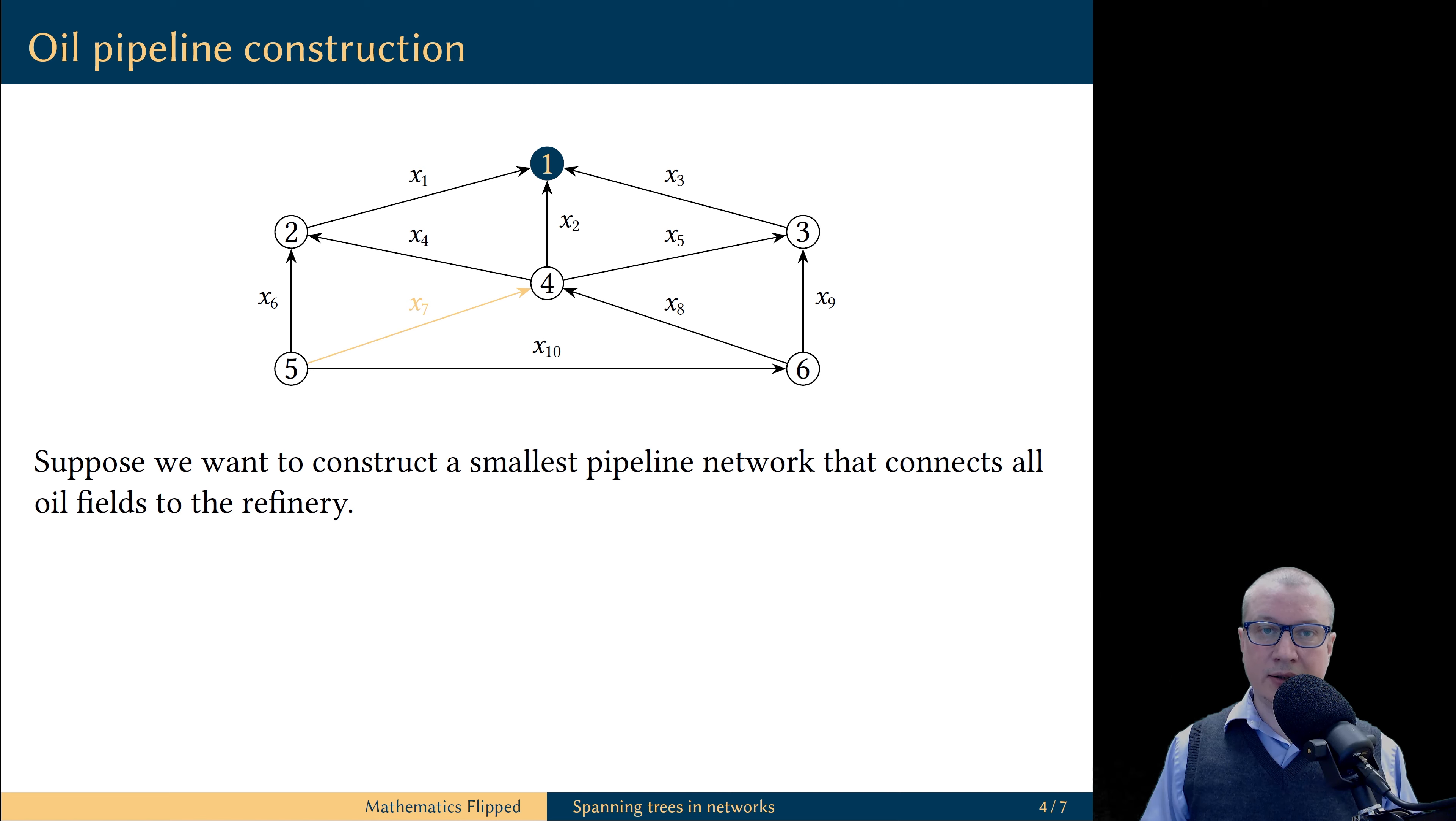Why could we discard this branch? It's because it was part of the loop. There is no need for oil to flow around the loops.